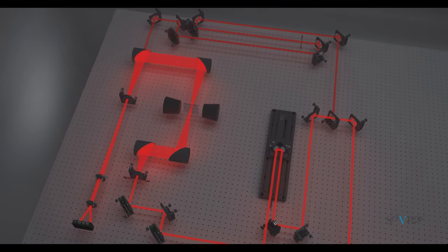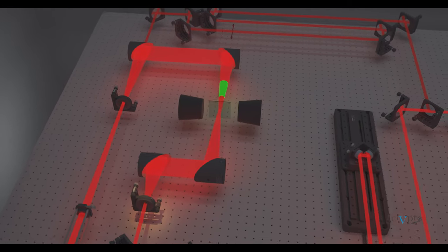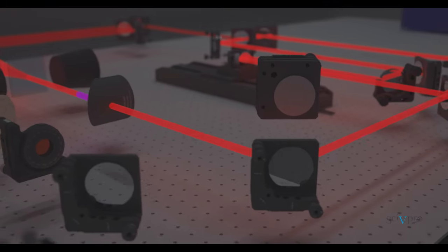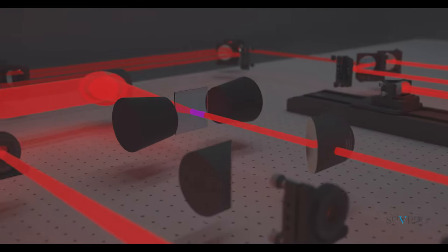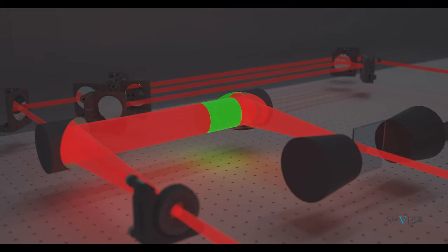To do this, we have a zinc telluride crystal which emits terahertz when being pumped by a femtosecond optical pulse. Whereas for terahertz emission, the optical pulse hits the sample directly. The output signal is a terahertz pulse emitted by the sample itself.